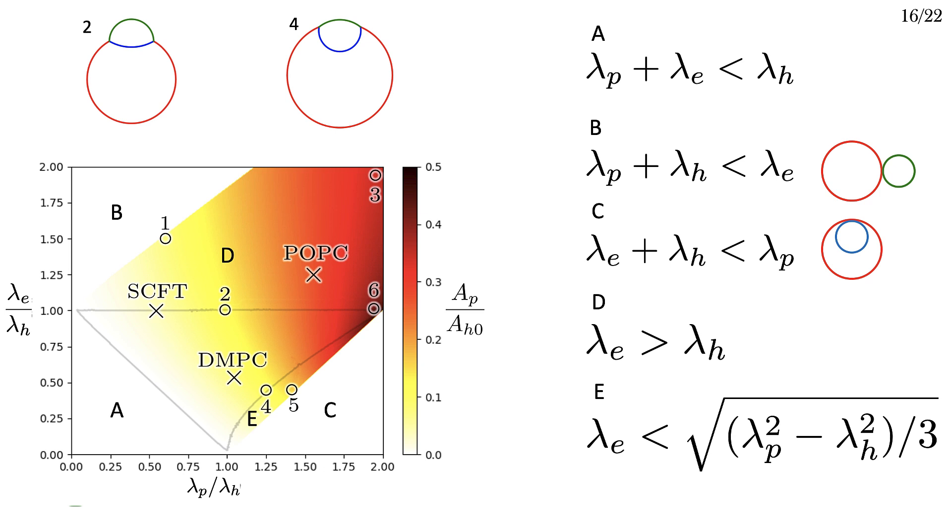Their vertical components must also add to lambda P. Combining this with their respective Laplace conditions gives the condition that lambda E equals lambda H. Region E is a bit more complicated, but once again start by setting the blue curve to a semicircle, using Laplace conditions for the representative interfaces, and breaking down the components to set the force at the junction points to zero. We find this relationship for region E.